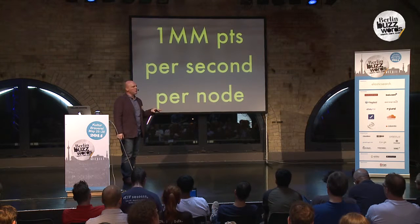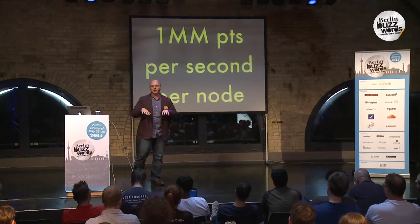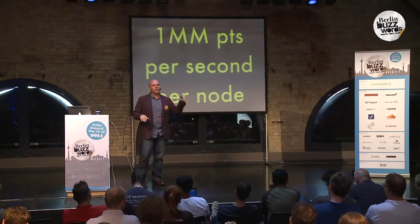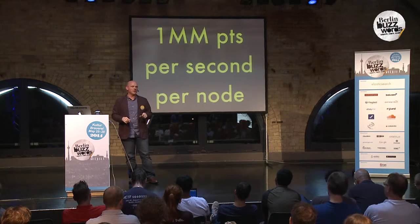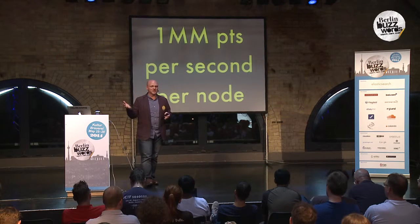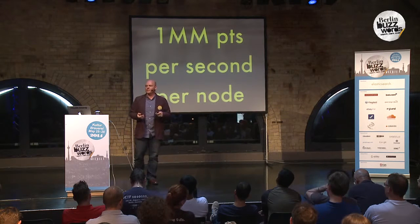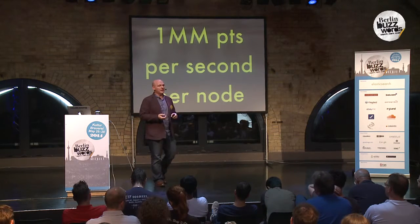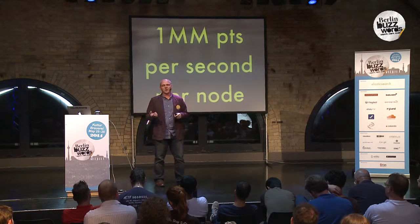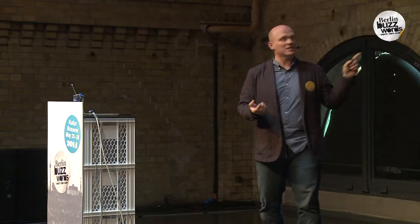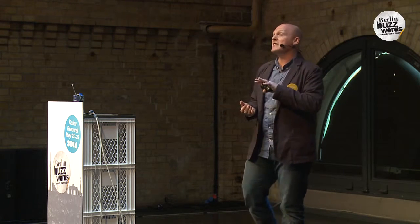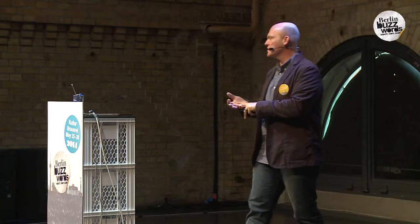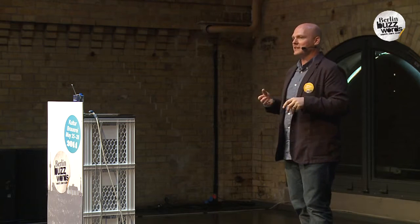I think we can get to a point with our metric software — and I'm not talking just about Blue Flood, I'm talking about open source systems and external API providers — where we can be ingesting a million points per second per node. That's currently probably an order of magnitude different from what any system is capable of now. The databases we use can handle that, and I don't think there's any reason the APIs or open source software can't get there too.